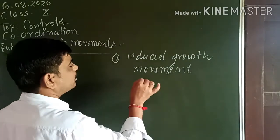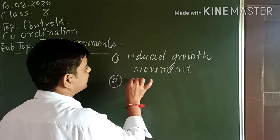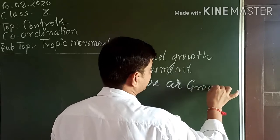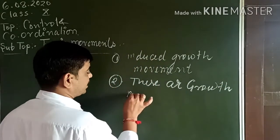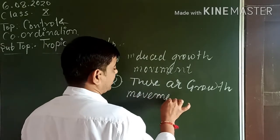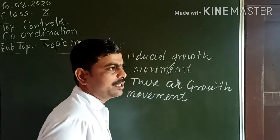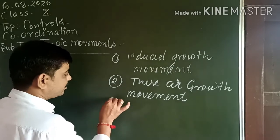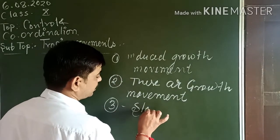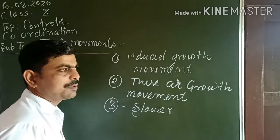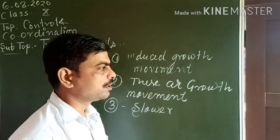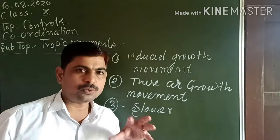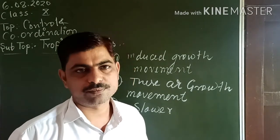Tropic Movements are Growth Movements. You studied Growth Independent Movement and Growth Dependent Movement, so Tropic Movement is a Growth Dependent Movement. The speed of response is slower because the plant takes time to grow its parts. This growth is under the influence of hormones.